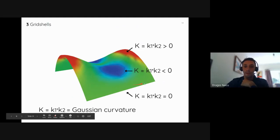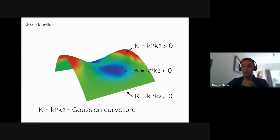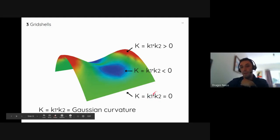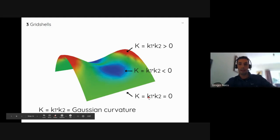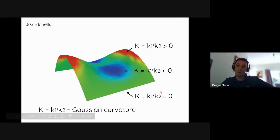Where at least one principal curvature is zero — as with a cone or cylinder — you get zero Gaussian curvature. A flat sheet of paper on your desk has both principal curvatures equal to zero.